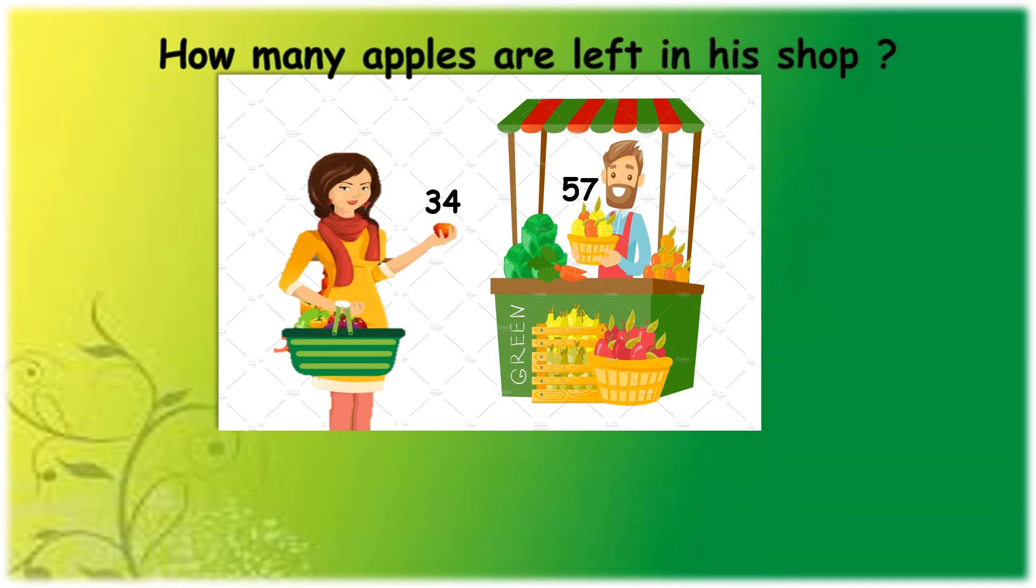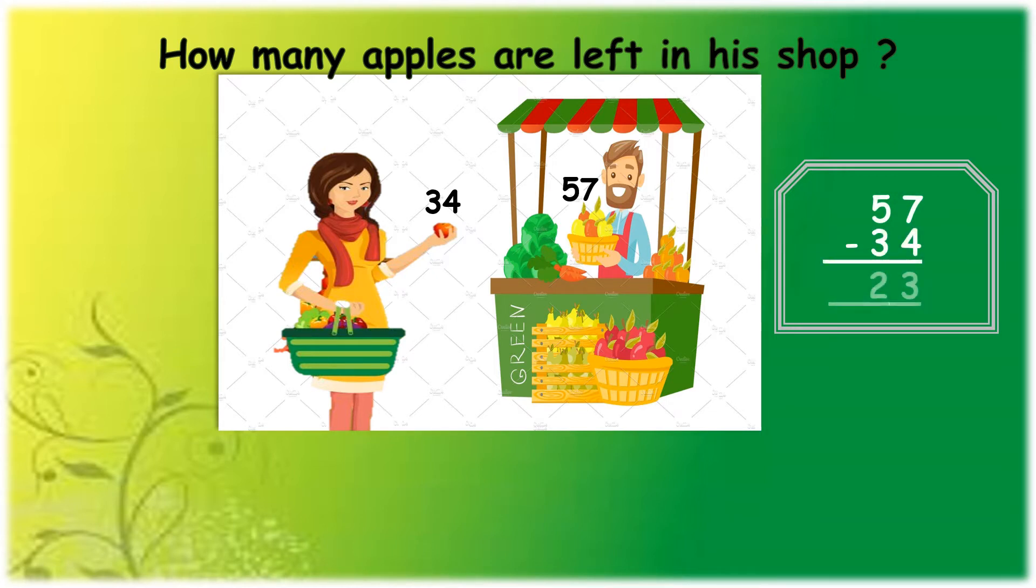You will subtract 34 from 57, for which you will write 57 minus 34 which is equal to 23. Now, you can say that he has 23 apples left in his shop.